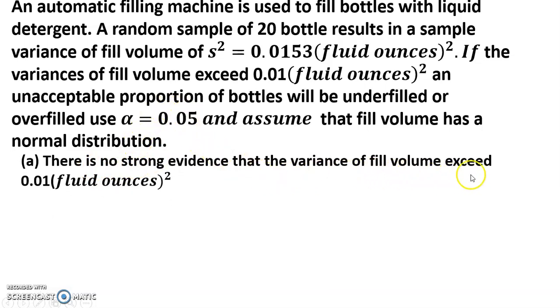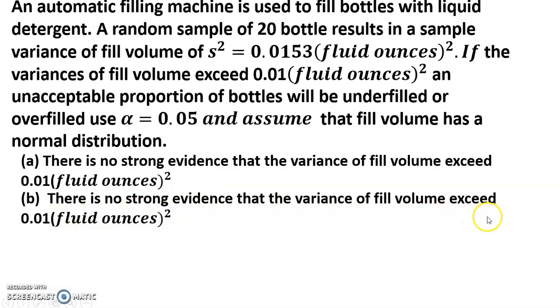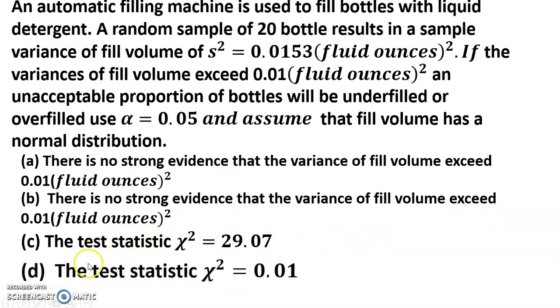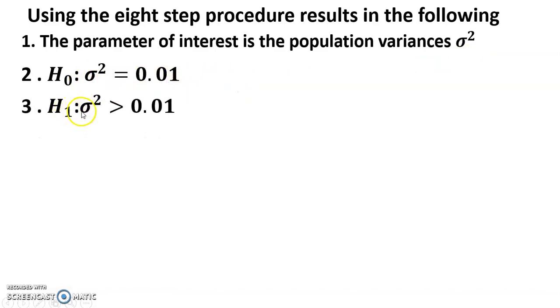There is no strong evidence that the variance of fill volume exceeds 0.01 fluid ounce squared. The test statistic chi square is equal to 29.07. Using the eight-step procedure: the parameter of interest is the population variance sigma square. H0: sigma square equals 0.01. H1: sigma square greater than 0.01. Alpha equals 0.05. The test statistic is chi square equals (n minus 1) times s square divided by sigma zero square.